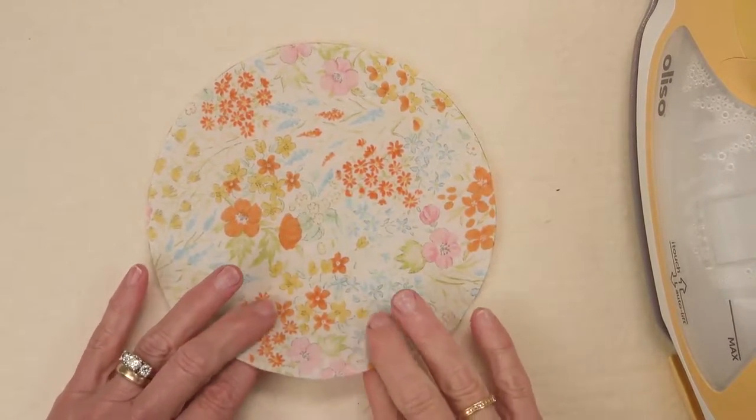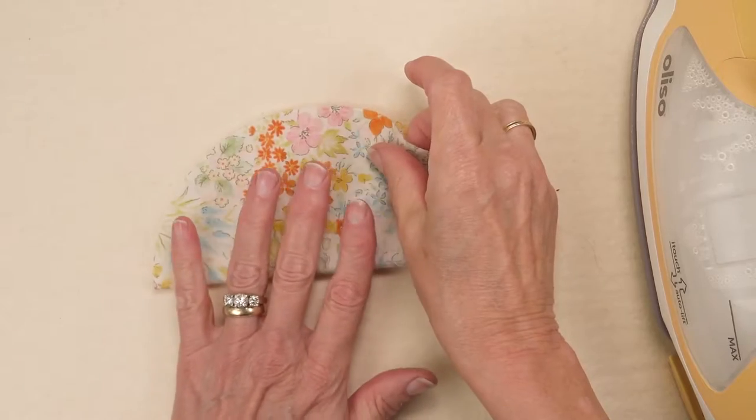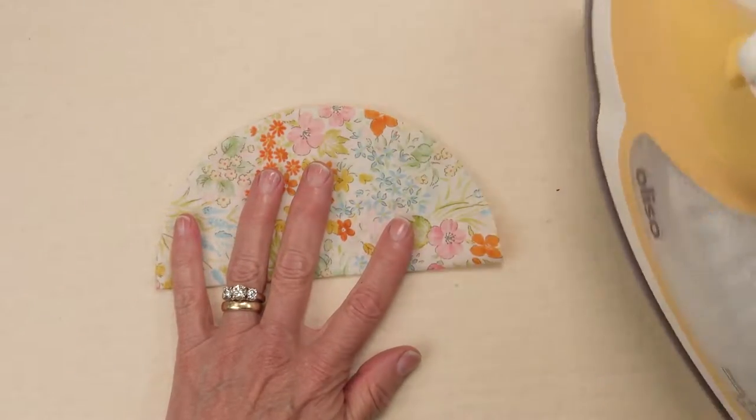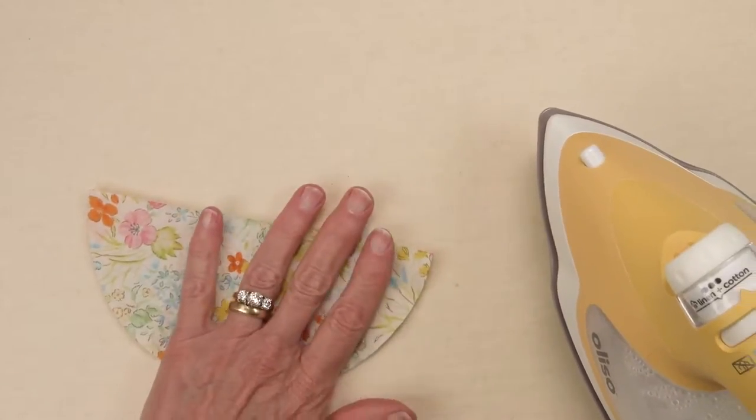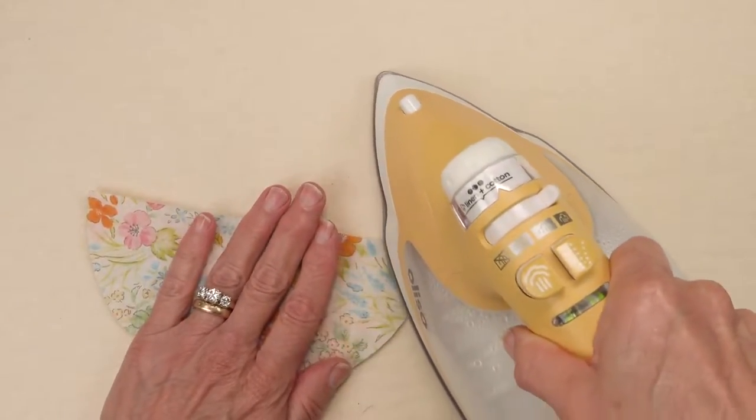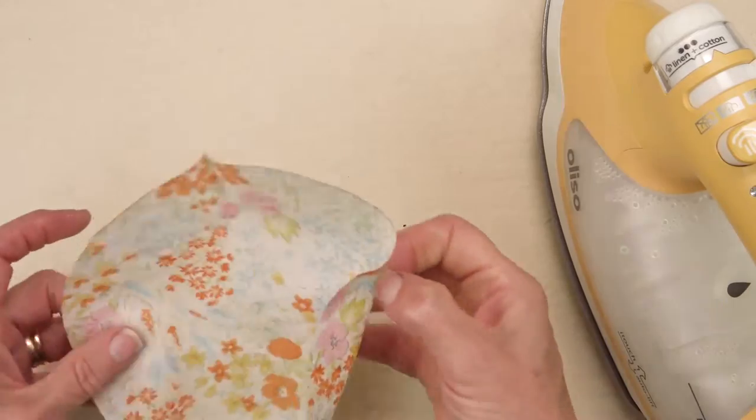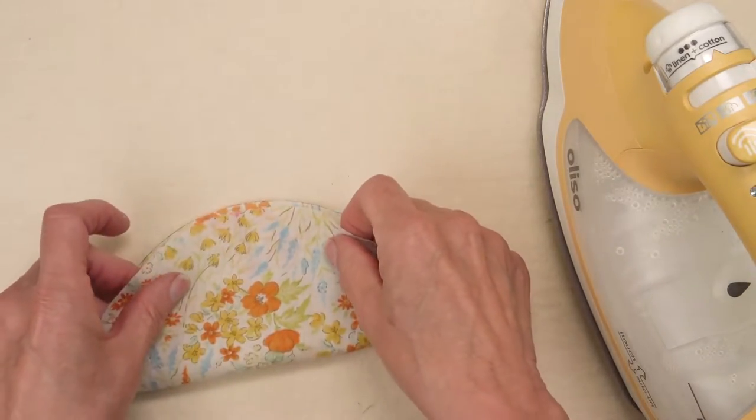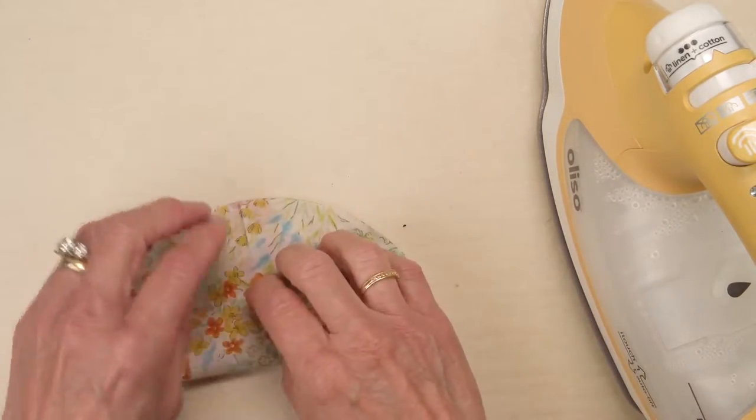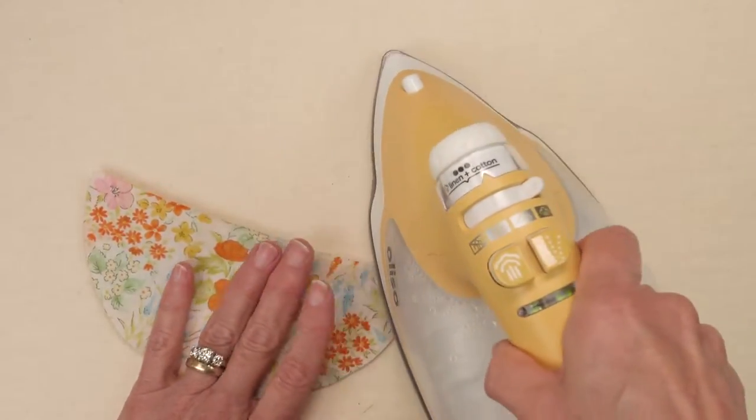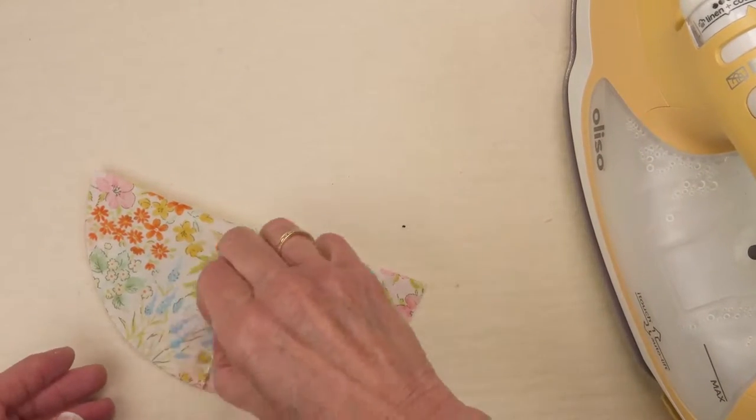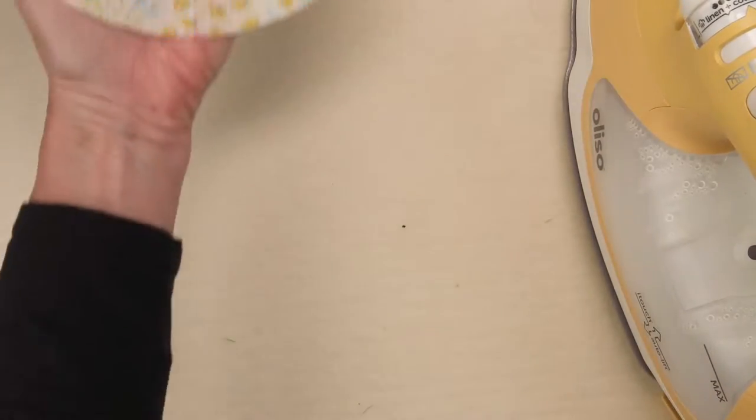Take your iron and fold each circle in half in one direction and give it a little crease just at the outer edge and the other side matching those pressed in creases and crease that outer edge. Both circles do that with.